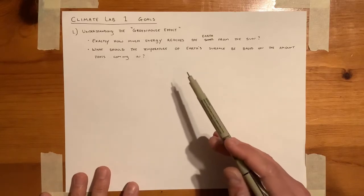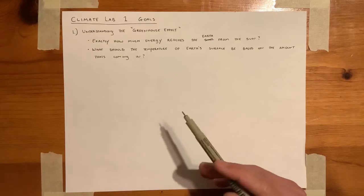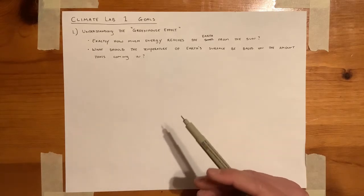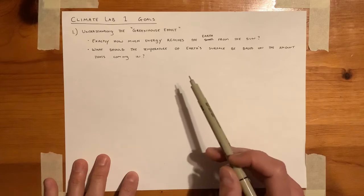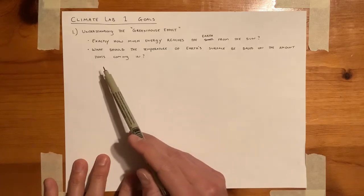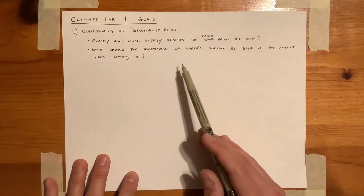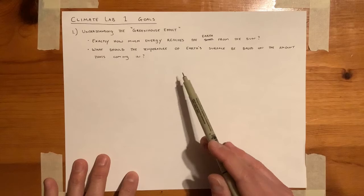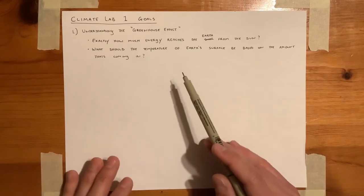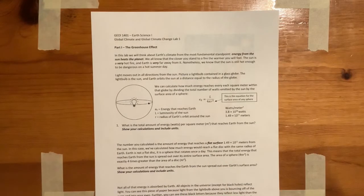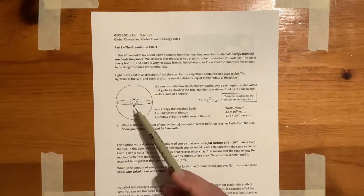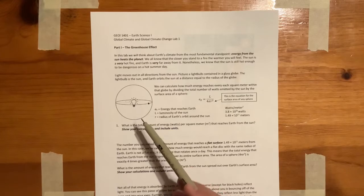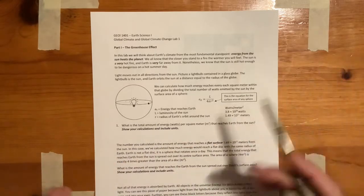In video 3.2, we talked about how the energy that reaches the Earth from the Sun is not evenly distributed, and that's very important — so if you haven't watched that video, please go back and watch it now. To figure out exactly how much energy is reaching the Earth from the Sun, we're going to use a conceptual model shown in this figure. We think of the Sun as a point source for energy, with light radiating outward in all directions from a center point — here represented by this light bulb — and the Earth rotating around it.